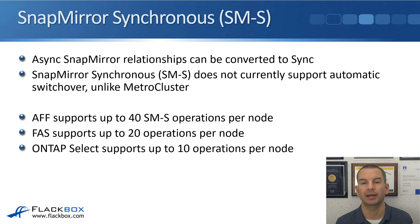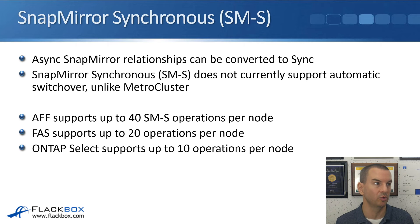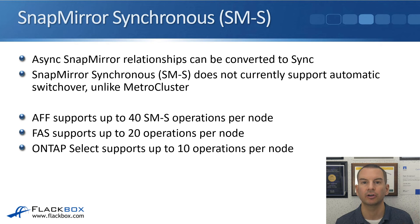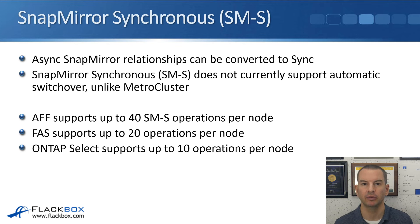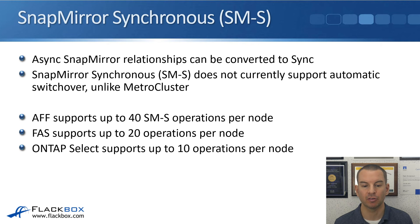Async SnapMirror relationships can be converted to synchronous. So if you had a system running ONTAP 9.1 with asynchronous SnapMirror relationships and want to convert them to synchronous, you can do that easily. SnapMirror synchronous uses the SnapMirror engine, which replicates at the volume level, so you can replicate from multiple source to destination volumes. AFF supports up to 40 concurrent operations per node, FAS supports up to 20, and ONTAP Select supports up to 10.